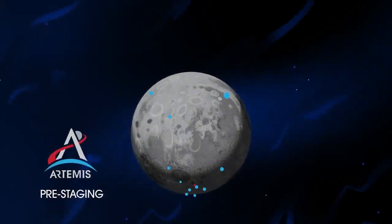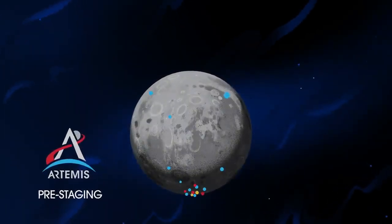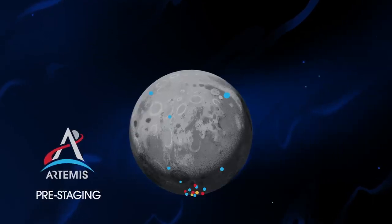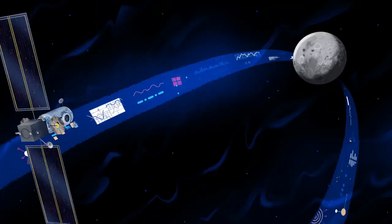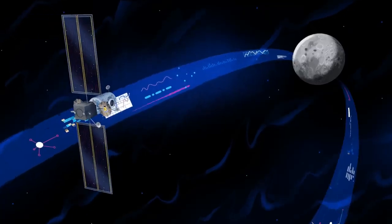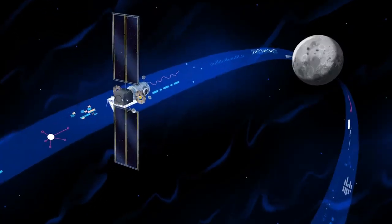Everything needed for lunar missions will be positioned in advance by commercial and international partners. This includes rovers, science experiments, and human-rated systems on the surface, but it also includes a dedicated lunar station in orbit around the Moon called Gateway.